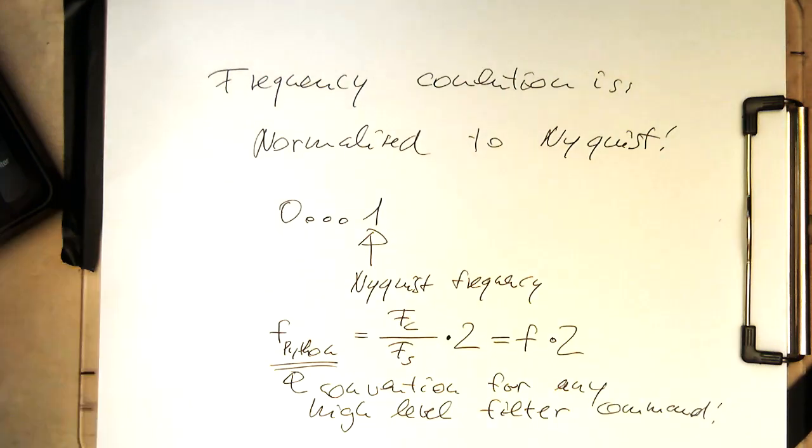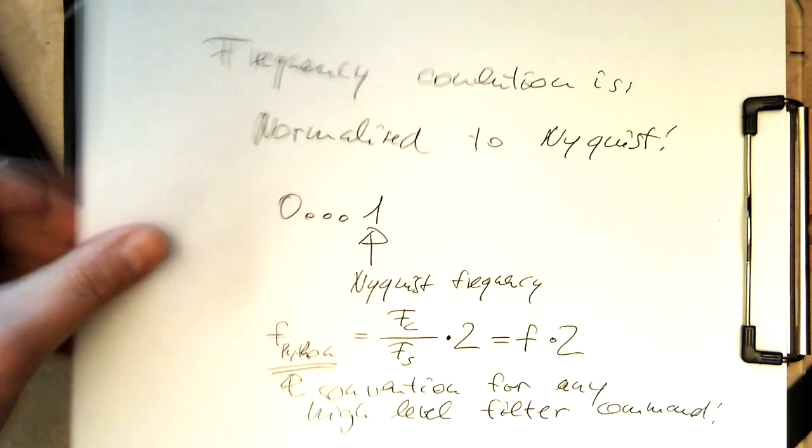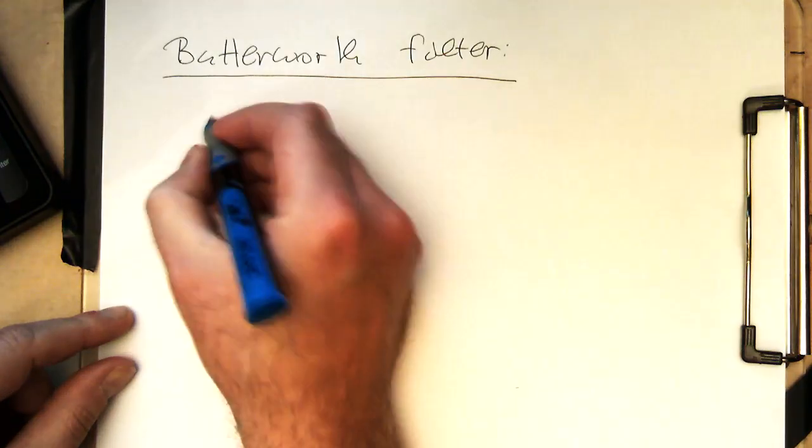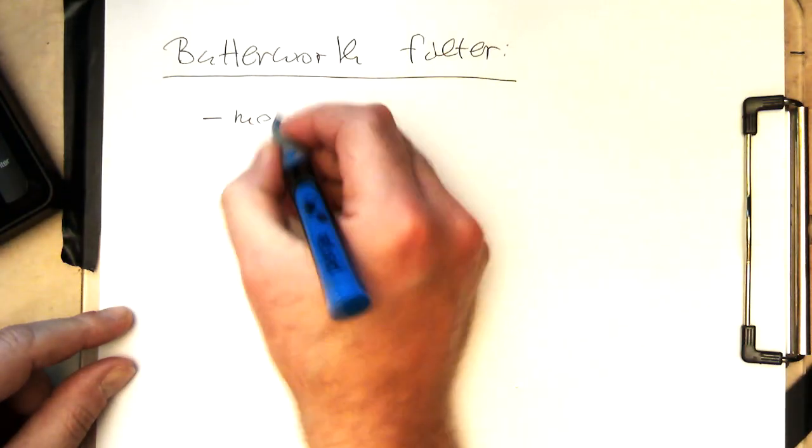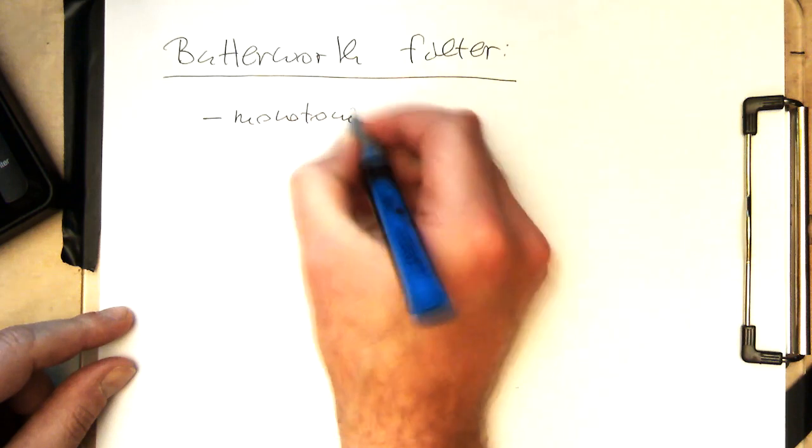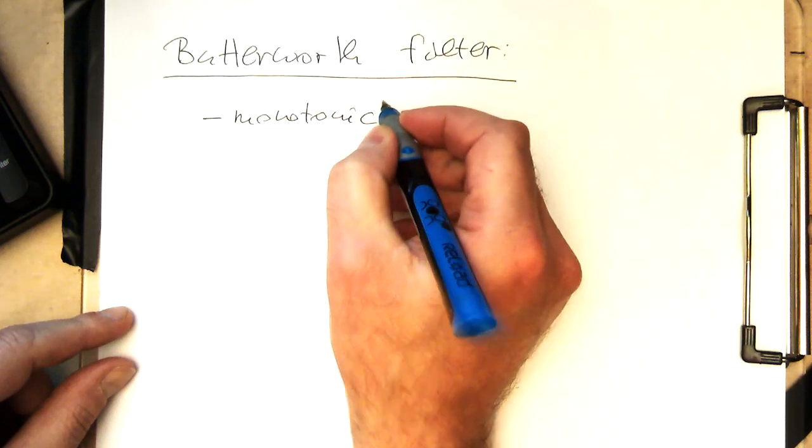So the first is the good old-fashioned Butterworth filter. The filter response is monotonic, so no peaks and bumps or something like this.